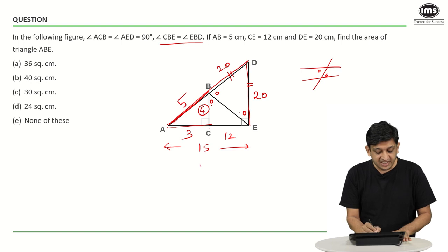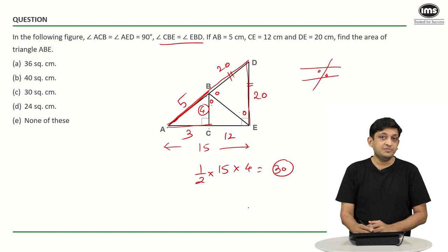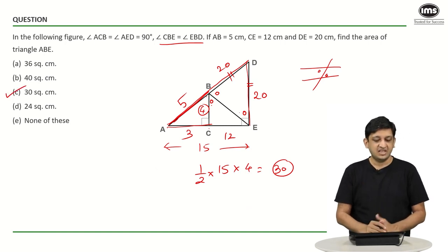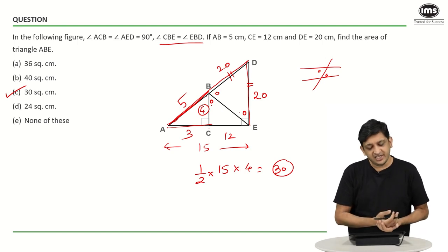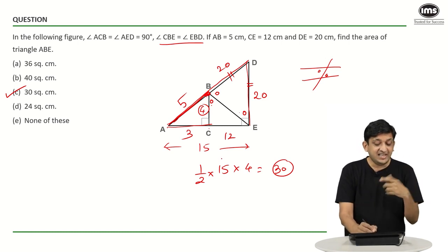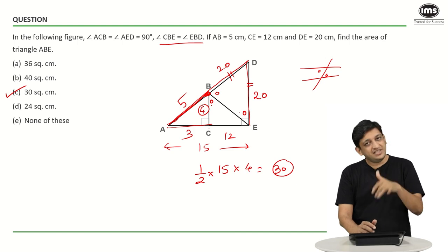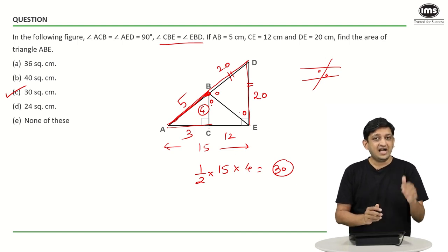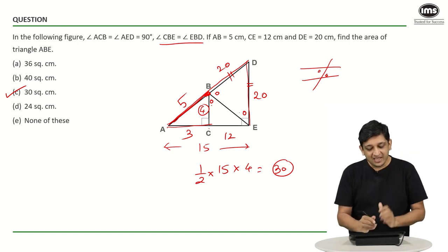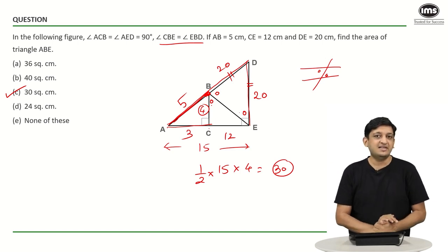Alternatively, point B divides segment AD in the ratio 5 to 20, so the two triangles have areas in the ratio 1 to 4. The larger triangle has area half into 20 into 15 equals 150, and triangle ABE is one fifth of that, giving 30. Either way, 30 is the correct answer.